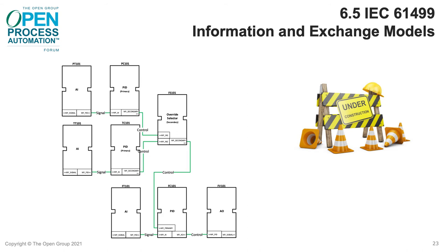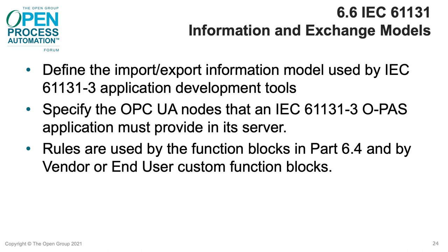IEC 61499 is a control programming system using distributed event-driven function blocks; this section is still under construction. IEC 61131 is a control programming system using function blocks, structured text, and ladder diagrams. Part 6.6 defines the import-export information model used by IEC 61131 application development tools and specifies the UA nodes in the information model that the OPAS application must provide in its OPC server. These rules are used by the function blocks defined in Part 6.4 and also by vendor or end-user custom function blocks.